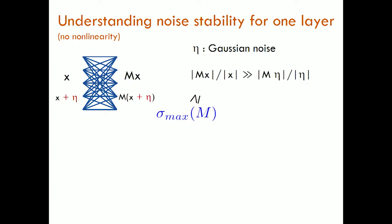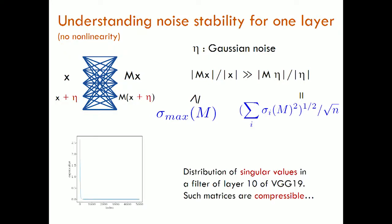The fact that the matrix rejects noise — doesn't transmit noise well — means the left-hand side is much more than the right-hand side. This says something linear-algebraic about this layer. From the noise stability we know this must be true, and you can verify that the singular values are very peaked: there are only a few large directions, and the rest of the singular values are pretty small. What this is suggesting is that the signal computed by previous layers is aligned with the singular vectors of the layer.